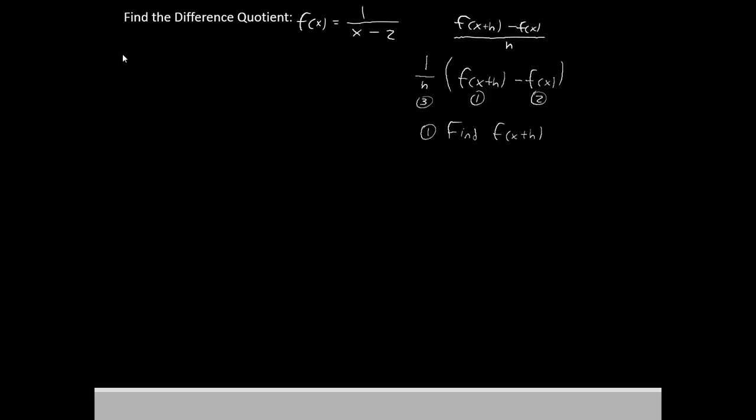Alright. If you remember what we did last time for our first step, when we did f of x plus h, all we did was replace this x with x plus h. Our equation will become 1 divided by x plus h minus 2. Not too bad. That's the end of the first step.